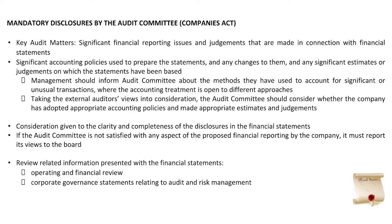The audit committee must take into account the independent auditors' views on whether accounting policies and judgments are correct. There are essentially three wheels in assessing financial statements: management, who does all the work and puts the statements together applying all the policies; the independent auditors, who examine what management has done; and the audit committee, which must weigh up all of this advice and make sure that at the end of the day those financial statements are indeed a true reflection of the company's financial position.